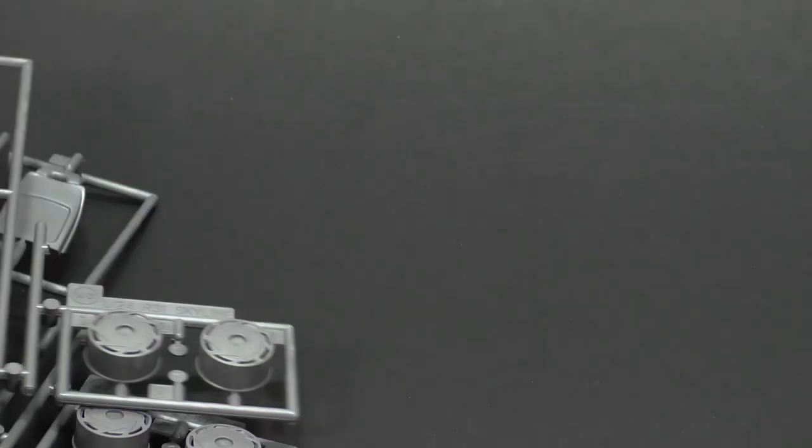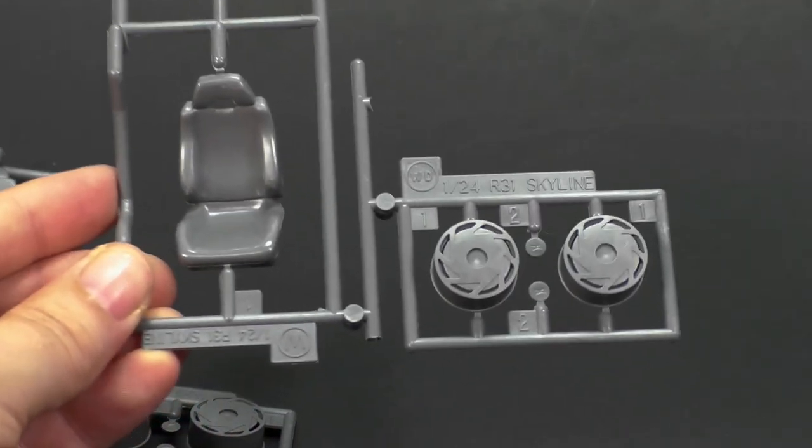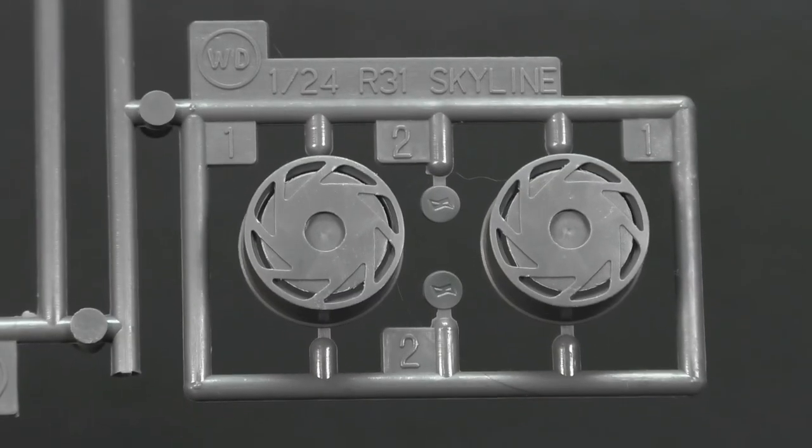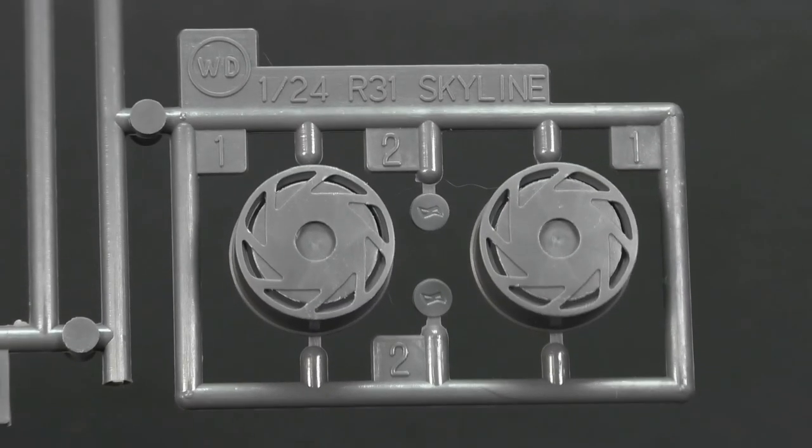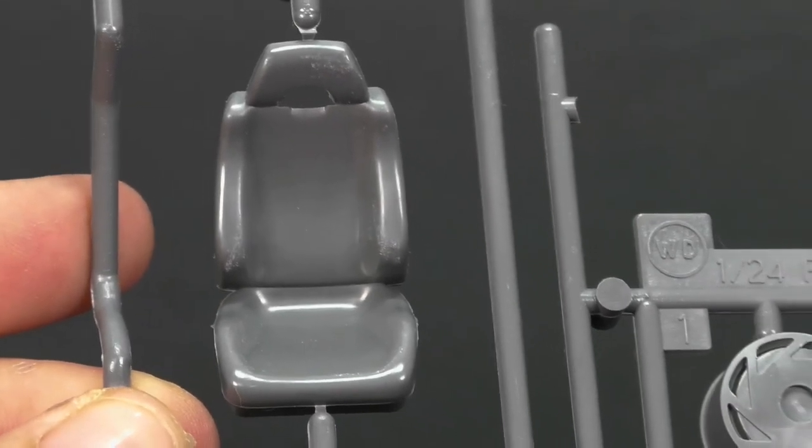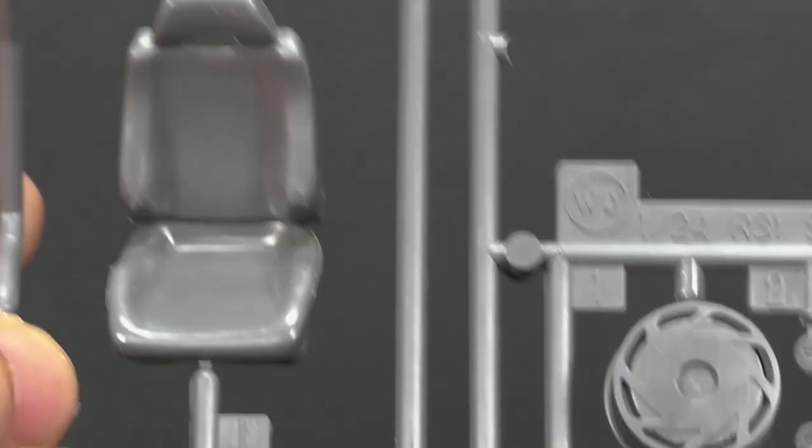And now we have the parts tree that contains the wheels and the front seat. So let's look at the wheels first. And the driver's seat, or excuse me, the front seats. So the same for this one as well.